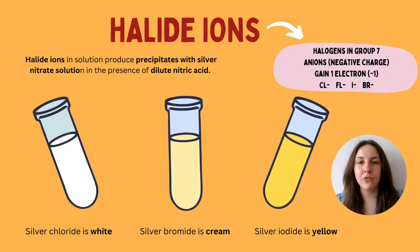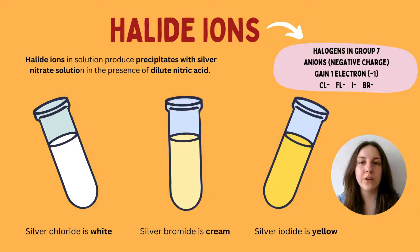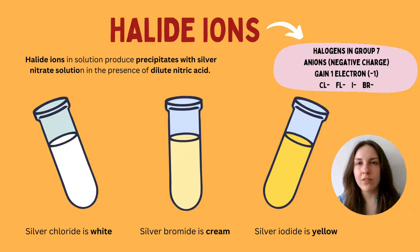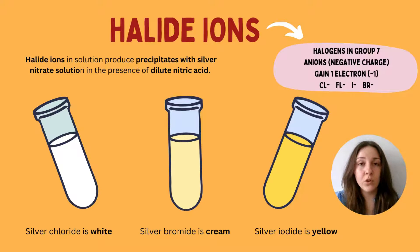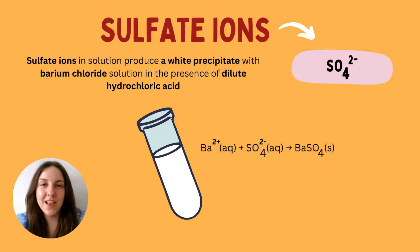To test for halide ions, you add silver nitrate solution in the presence of dilute nitric acid — the acidity is required. The different halides produce specific colored precipitates: silver chloride gives a white precipitate, silver bromide gives a cream color, and silver iodide gives a yellow precipitate.